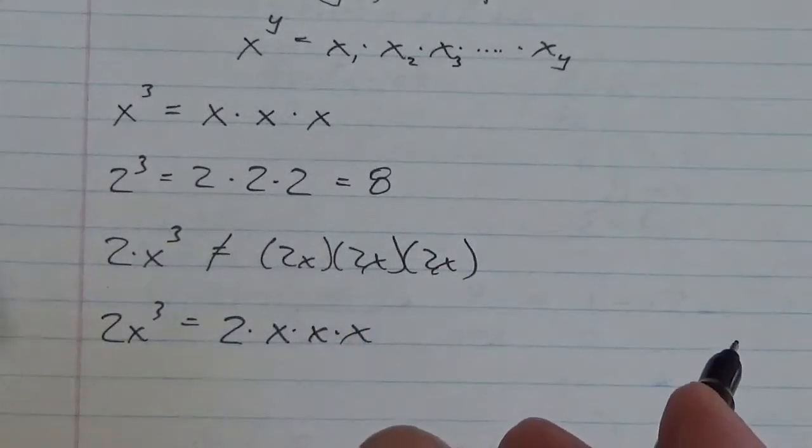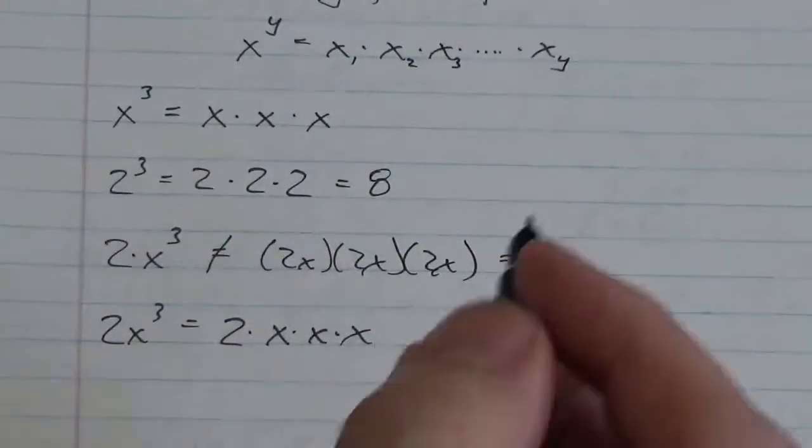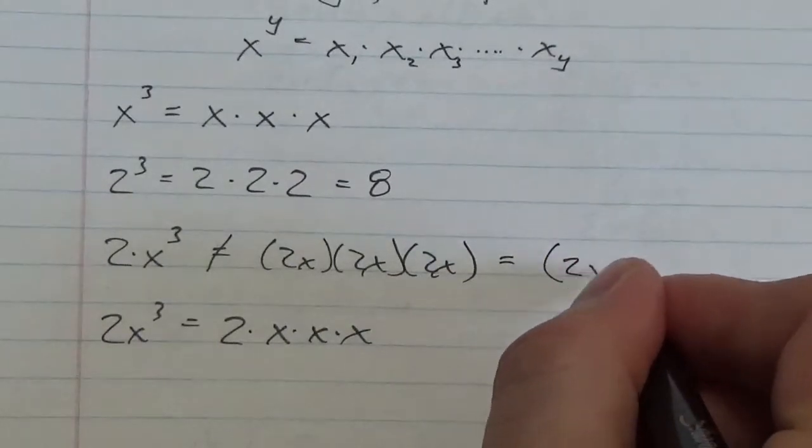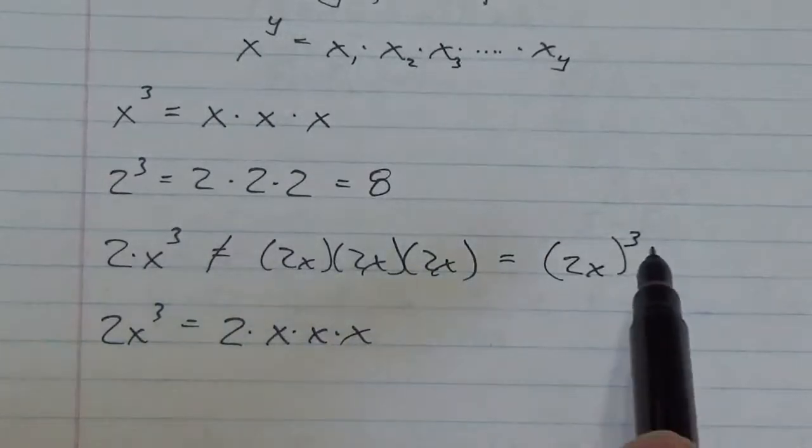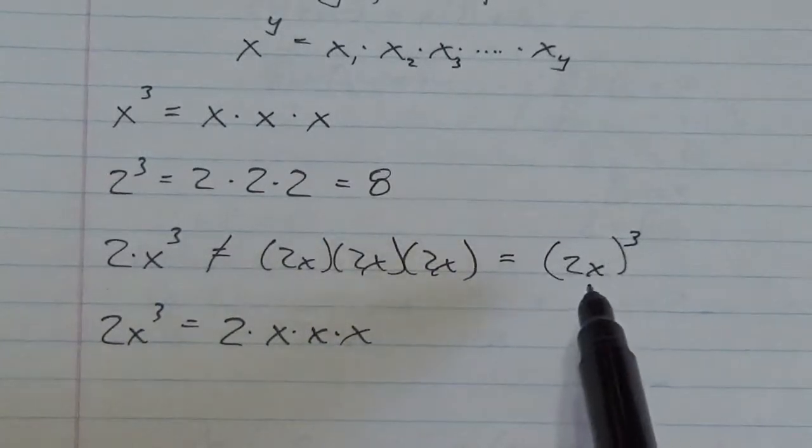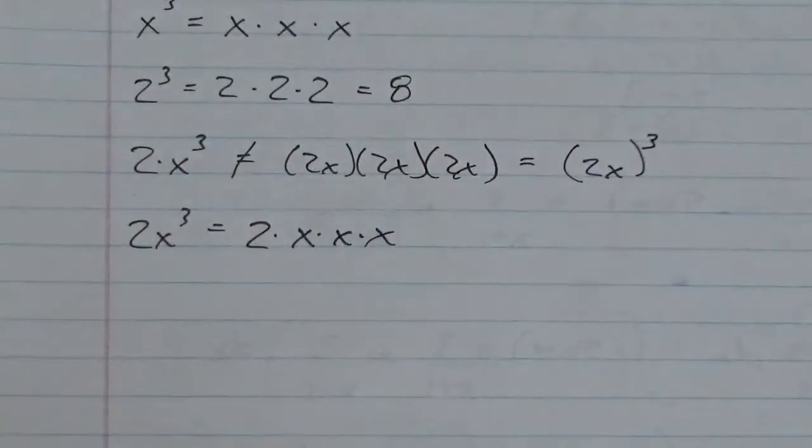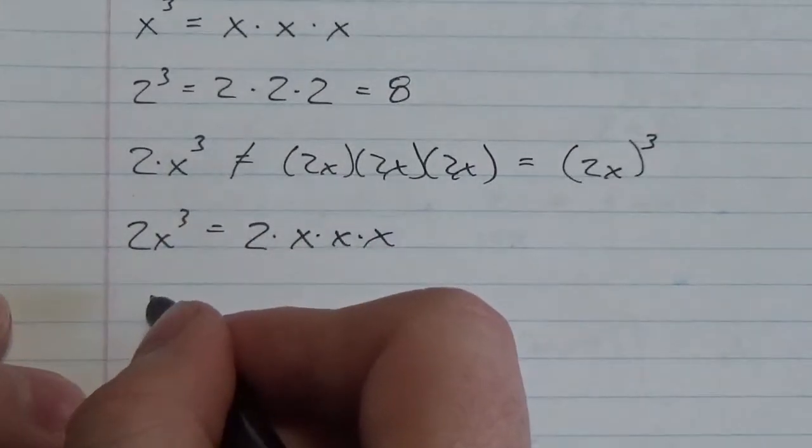Now if this is what I wanted, then I need the 2x to be the base. Well, the exponent only applies to the symbol directly in front of it. So if I want that to be cubed here, then what I need to do is I need to put parentheses or brackets around the 2x. See, now the cube applies to the parentheses, or whatever's inside the parentheses here. Now I hope that makes sense, because probably one of the most common errors that gets made is using this right here.